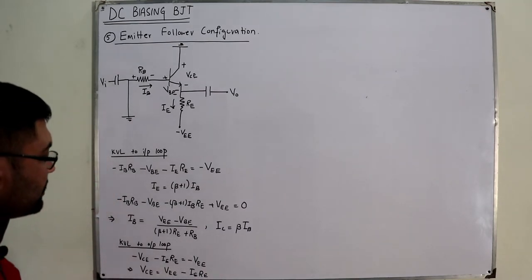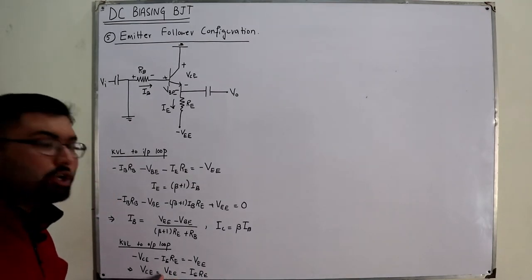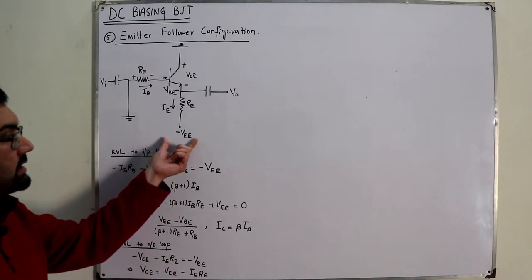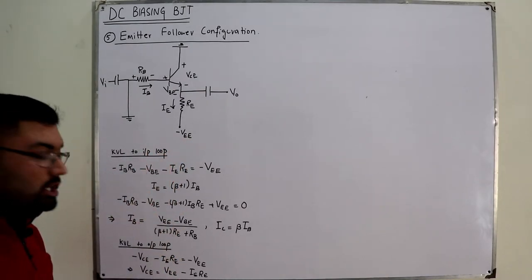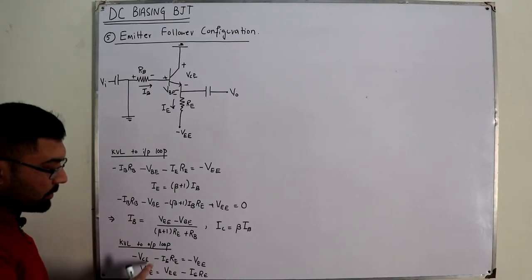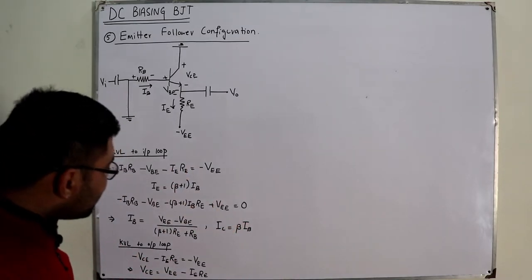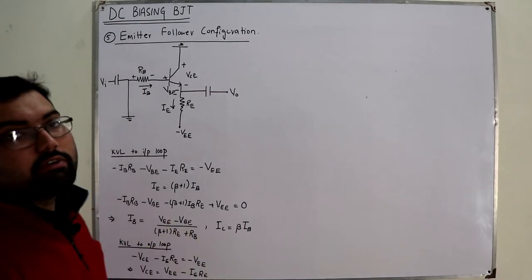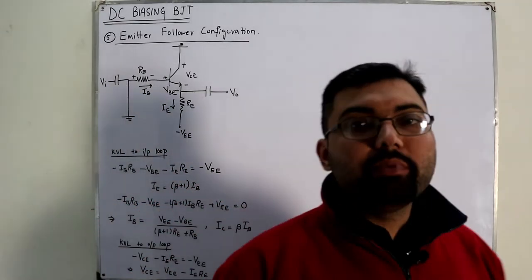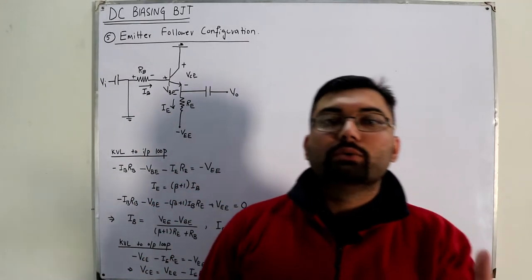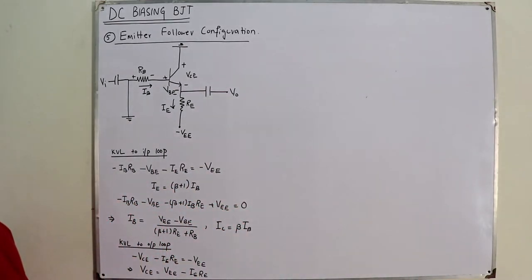In examples, you only use the magnitude of VEE. For instance, if VEE is −20 V, you put 20 in the equation, not −20, because the negative sign has already been included in the KVL equation.